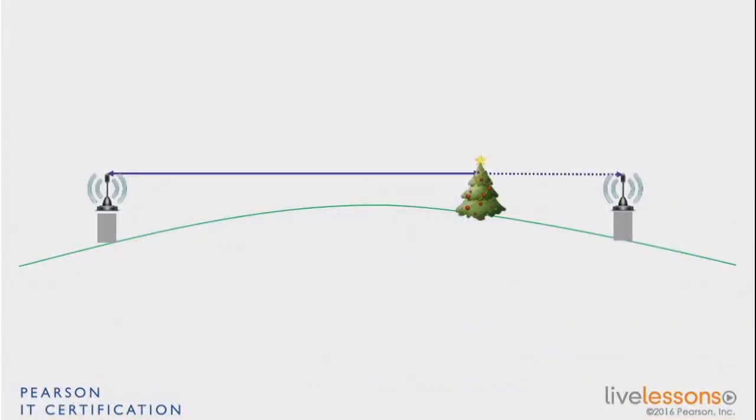What line of sight is, is that if you have a receiver and a sender, they have to be able to be in range—that's the amount of energy and the link budget—but they also have to be able to see each other from a radio perspective.